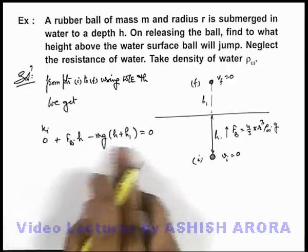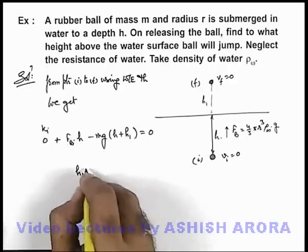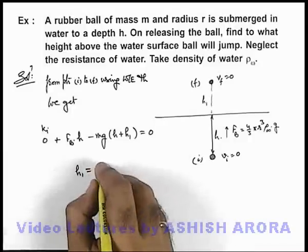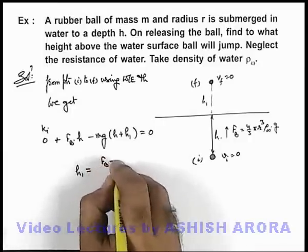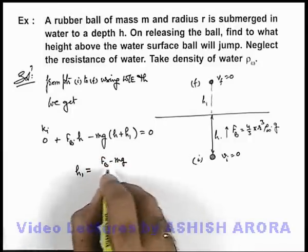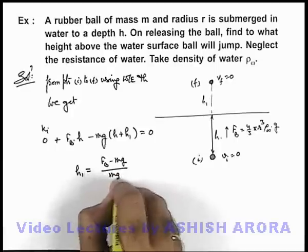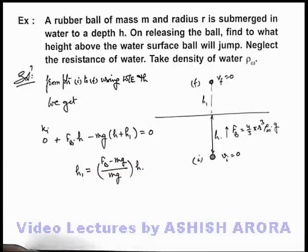If we reanalyze it, the value of h₁, the height up to which the ball can be raised, is given by (F_b - mg)/(mg) multiplied by h. This is the expression we use.